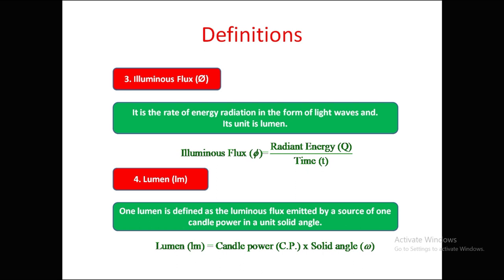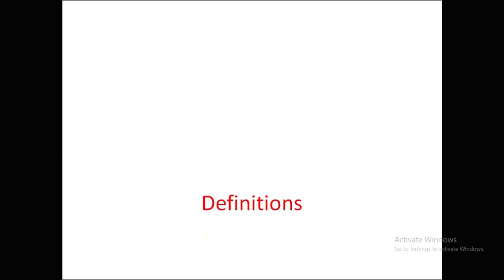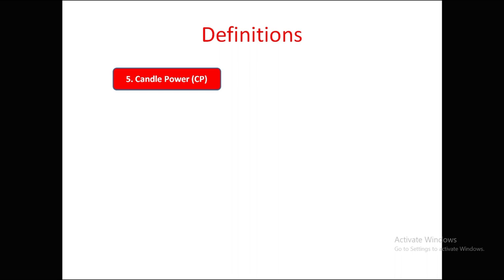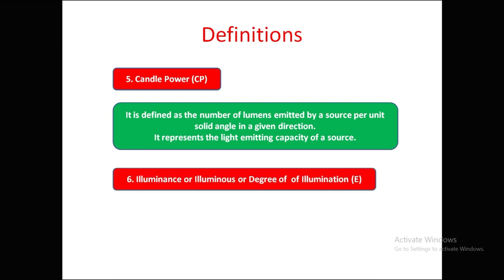Candle power is defined as the number of lumens emitted by a source per unit solid angle in a given direction. It represents the light-emitting capacity of a source.